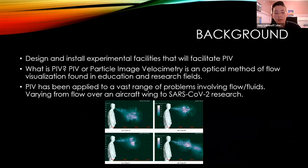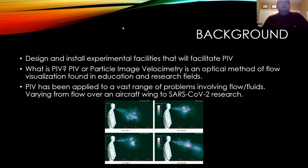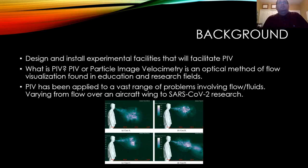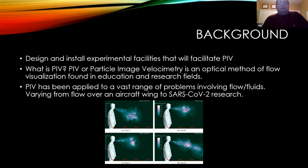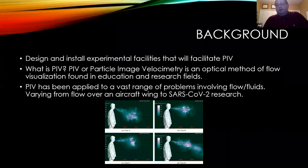We'll start off with background from Jay. The objective of the senior design project is the design and installation of a particle imaging velocimetry experimental facility. PIV is an optical method of flow visualization used in education and research to obtain instantaneous velocity measurements and related fluid properties in a cross section of a flow. It has been used in a vast range of research problems, from simple flow over an airfoil to an entire aircraft wing, and to research involving the SARS-CoV-2 virus and fluid droplets coming from humans when they sneeze, cough, or talk.